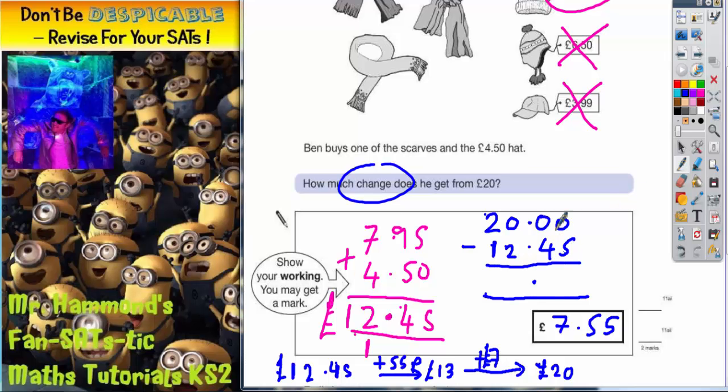0 take away 5 we can't do. Can't borrow from here because this is a 0. Can't borrow from here because this is a 0. So the only place we can borrow from is here. So we make that into a 1 and make that into a 10. Now we can't jump across columns, so we need to borrow from this 10, which will now become 9, and take that one there. And then borrow from this 10, which will now become 9, take that one to there.